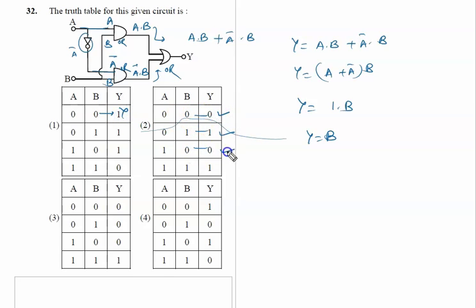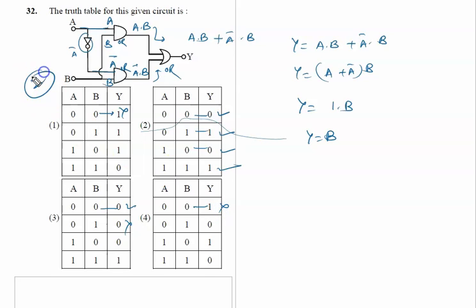Because B is the output: 0 — ok; 1 — ok; 0 — not ok; 0 — not ok. Therefore, option 2 is the correct answer to this problem.